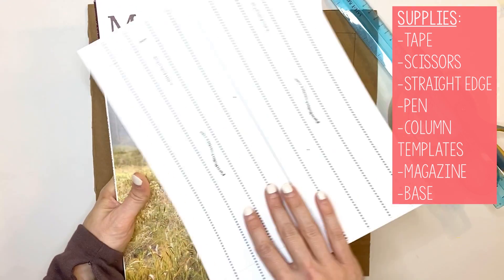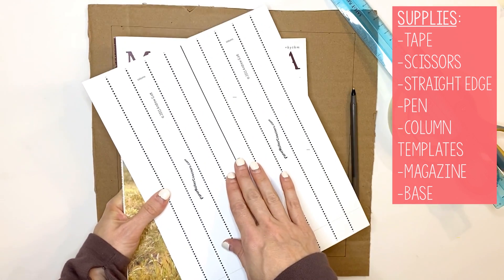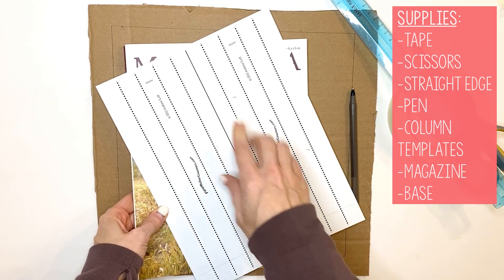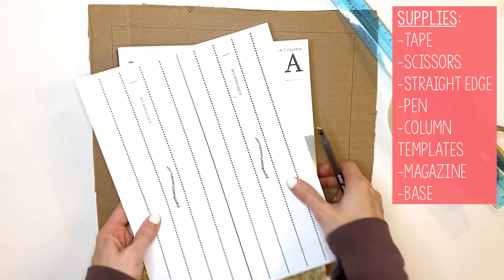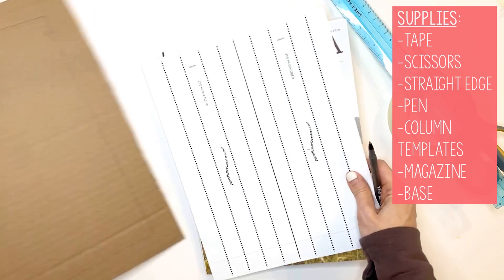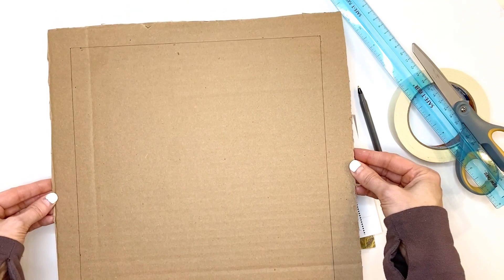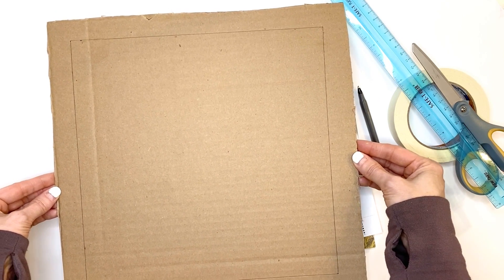Put the magazine underneath the paper roller coaster templates. This will help make sure that when you're tracing and scoring these lines, it doesn't go through and make marks on your table because you are going to be pressing firmly. You need to have a base. The base for your paper roller coaster should be 13 by 13 inches. You can also do 13 by 23 inches.